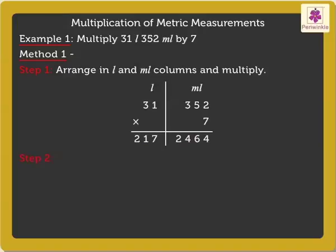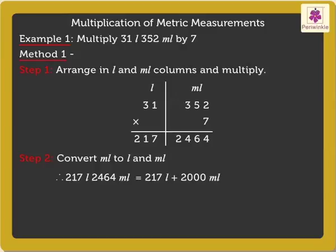Step 2: Convert millilitres to litres and millilitres if needed. Thus, on converting 217 litres 2464 millilitres, we get 217 litres plus 2000 millilitres plus 464 millilitres, which is equal to 217 litres plus 2 litres plus 464 millilitres, which is equal to 219 litres 464 millilitres.